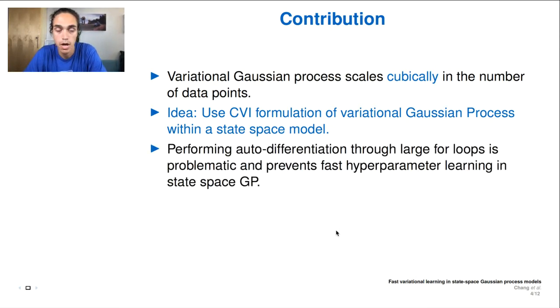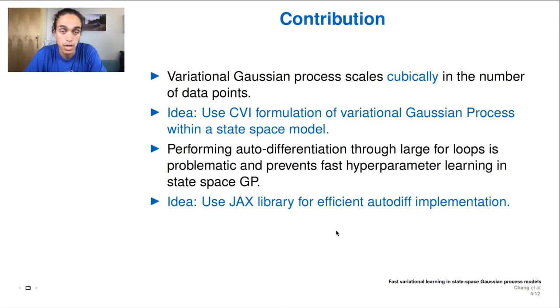But state-space models involve large for loops, which is problematic if you want to do automatic differentiation for hyperparameter learning. But in the paper, we take advantage of the JAX library, which allows us to do some efficient implementations, and therefore we can do hyperparameter optimization quickly.